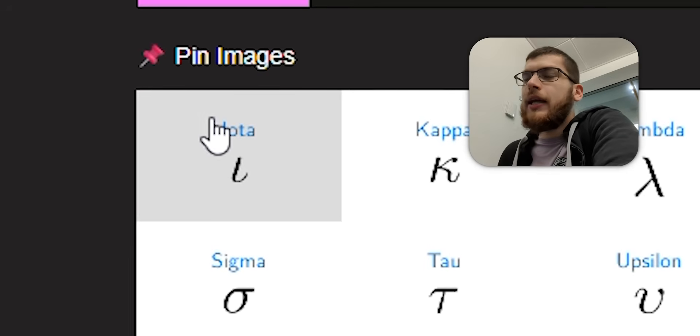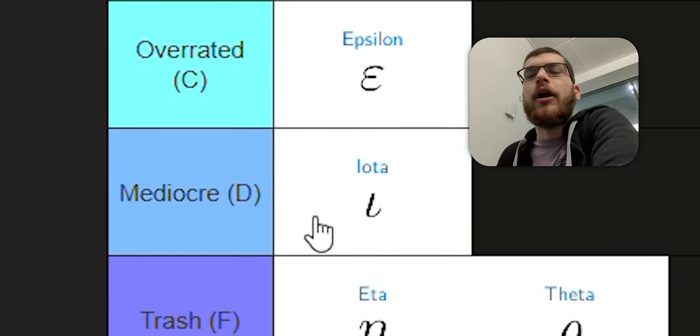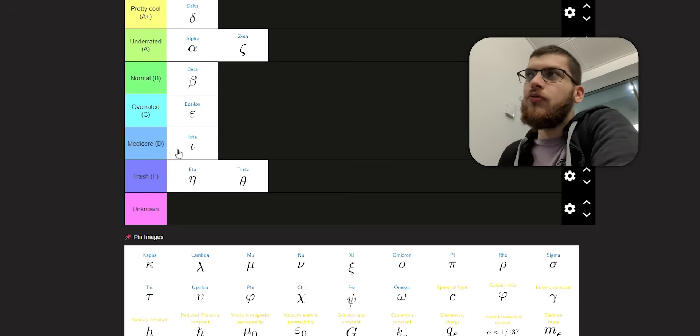Next, we've got iota. Iota is very easy to write. It's probably the easiest to write symbol. It doesn't look very good. It looks like a mistaken letter. So I'll put it in mediocre. It gets points for being easy to write, but it's got really no other qualities other than that.